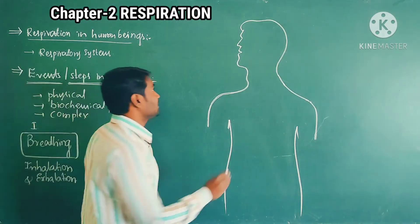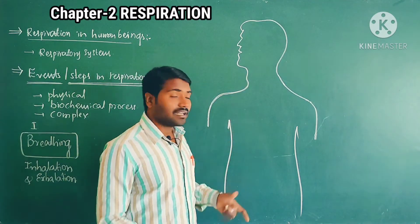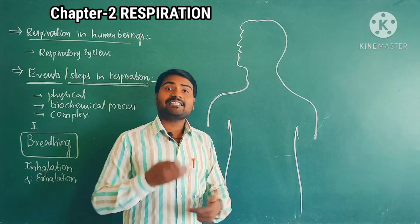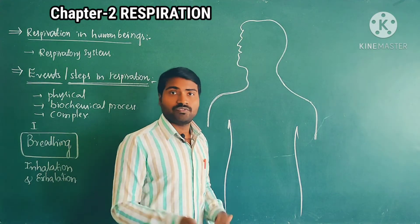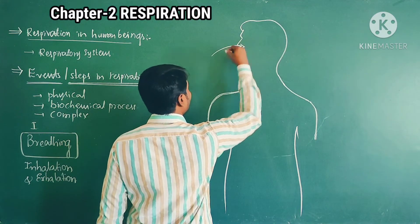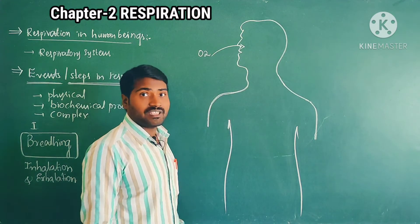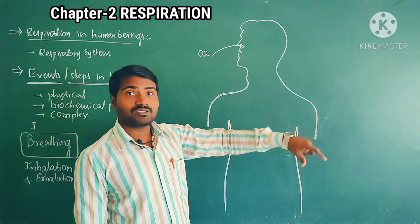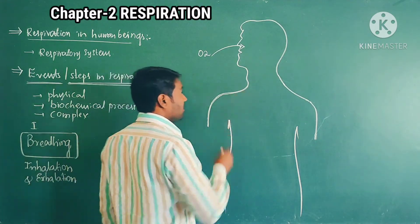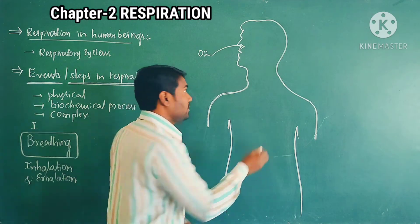Inhalation and exhalation — this is step one. How does inhalation take place? It takes place through the nose. Air enters into the nose. Oxygen enters through inhalation, and from the lungs, carbon dioxide comes out. That is exhalation.